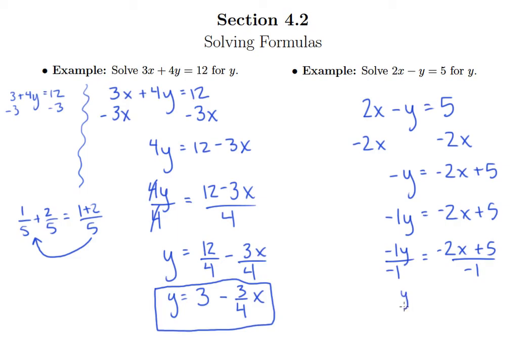And so I just have y on the left side. And then I can put negative 1 under each term individually. So I get y equals negative 2 divided by negative 1, which is of course just 2. And then 5 divided by negative 1 is negative 5. So instead of writing plus negative 5, I'm just going to write minus 5. So I've solved for y in both of these formulas.